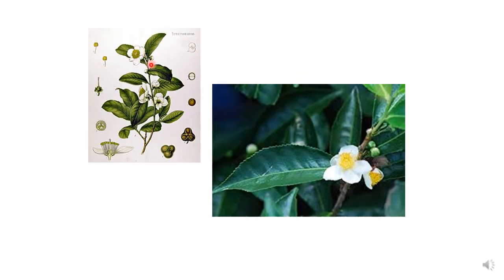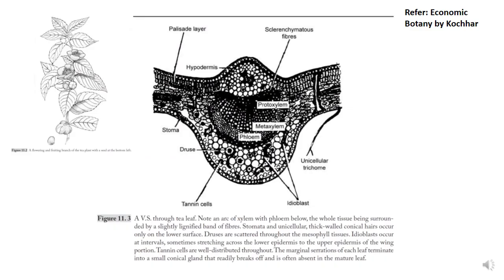Here you can see the specimen showing white flowers and alternate leaves. The flowers produce a three-celled woody capsule. You can also see that the leaf has a serrate or toothed margin and the white flowers are yellow in the center.